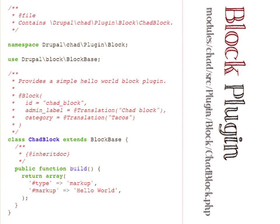I'll talk more about how you actually know what goes into that annotation, because it does vary per plugin type. But in the case of a block, you can see we're providing a unique ID for the block, the title of the block, and the category — information that Drupal needs in order to list this block on the administration page. And finally, we're extending the block base class and implementing the build method, which returns our content.